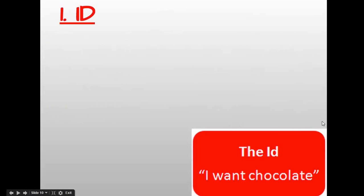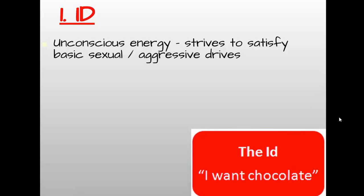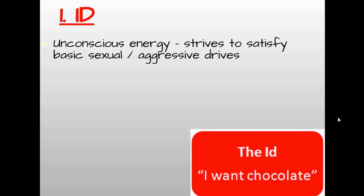The first construct is called the id — pronounced 'id,' not I-D. The id is an unconscious component of our personality. We call these constructs of personality — a construct is a hypothetical idea. These are not people; they're not little parts of our personality with any physical manifestation. They're simply hypothetical ideas. Freud actually called it an energy. The id is completely unconscious, and its goal is to satisfy our basic sexual and aggressive drives.